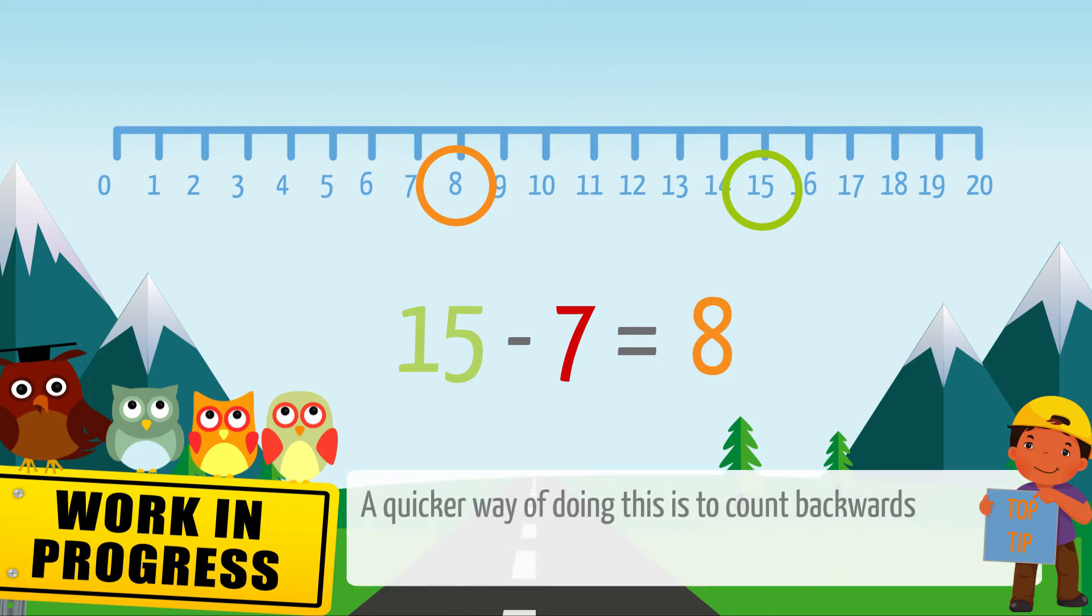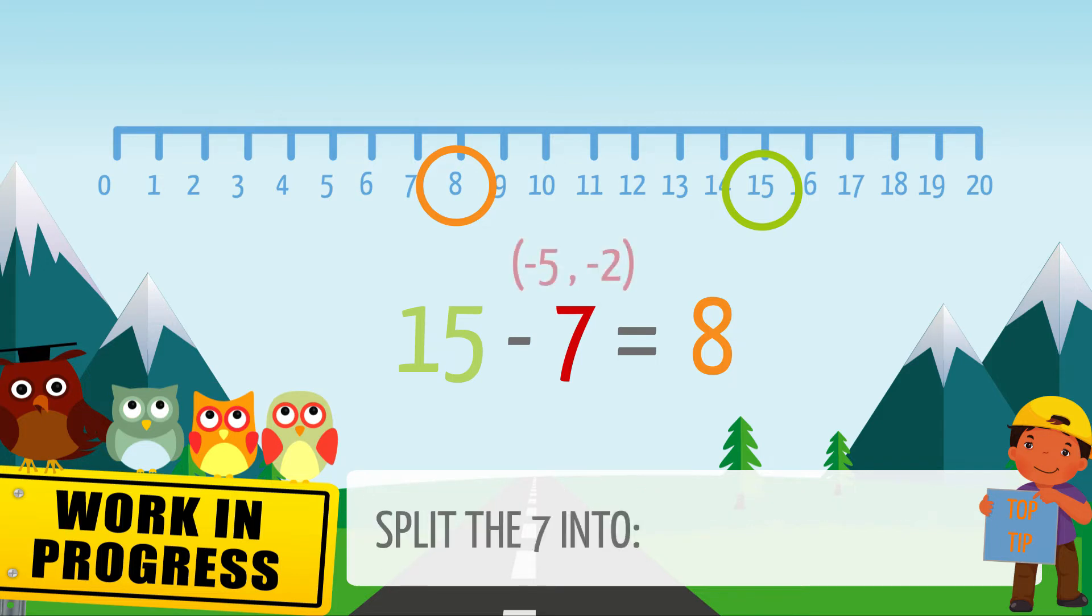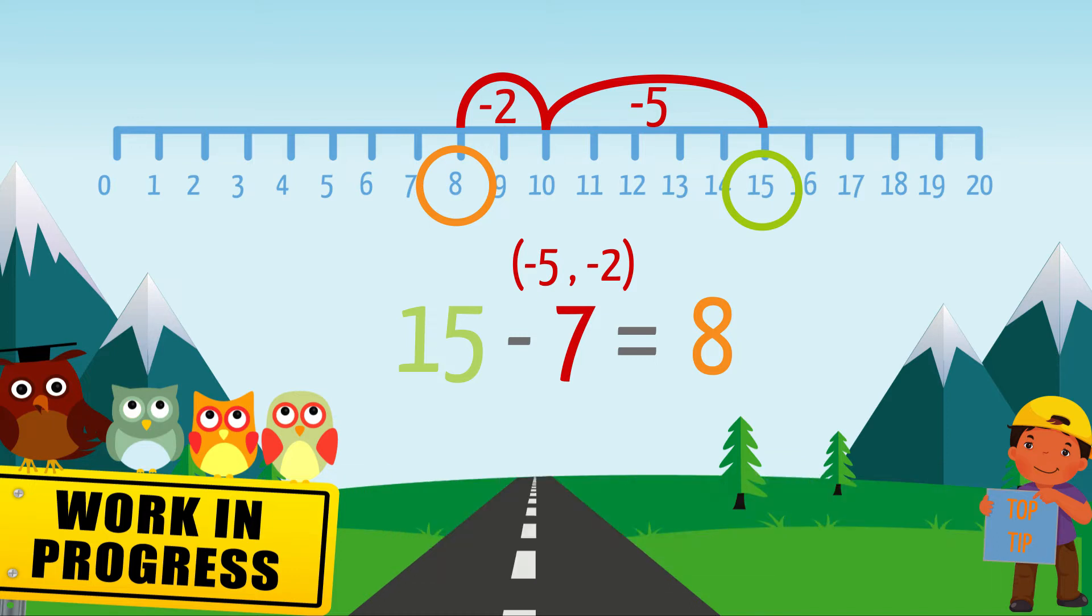A quick way of doing this is to count backwards in jumps on a number line. We can split 7 into 5 and 2. Now let's make the jumps by counting backwards. 15 minus 5 is 10 and 10 minus 2 equals 8. The answer to 15 minus 7 is 8.